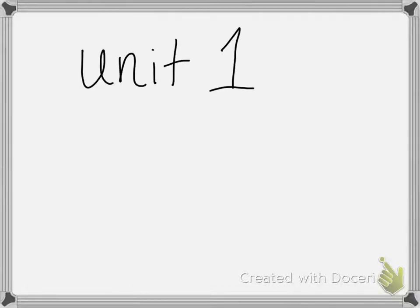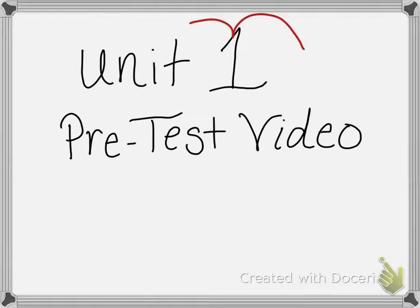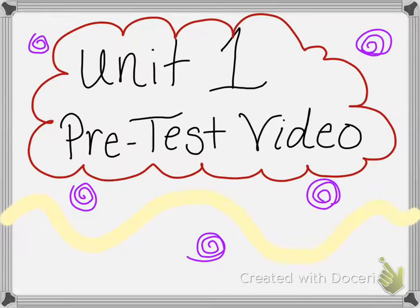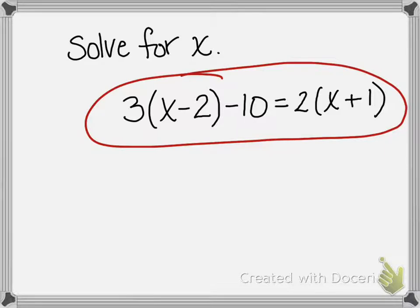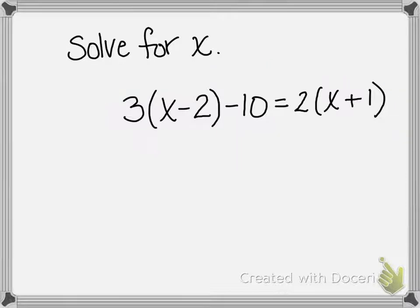Hey gang, this is our unit one pre-test video. Grab your dry erase board, marker, and a rag and let's get going. On your dry erase board you are going to write this: 3(x - 2) - 10 = 2(x + 1). I'm going to give you just a minute to start solving that.